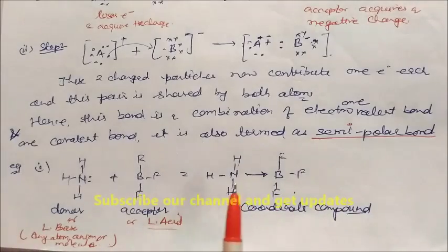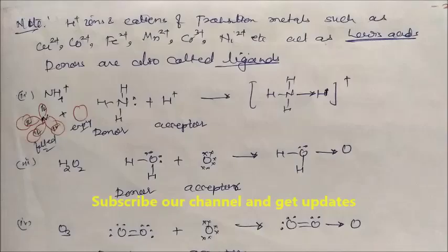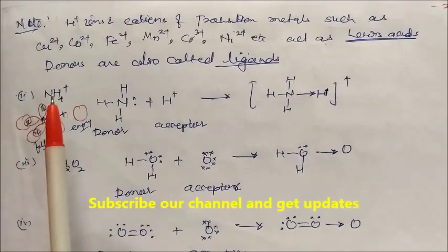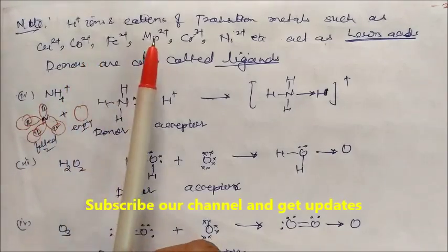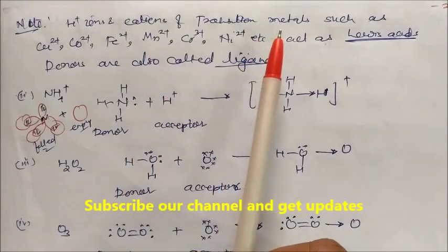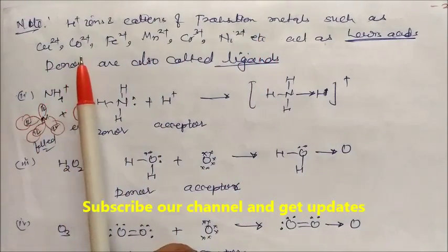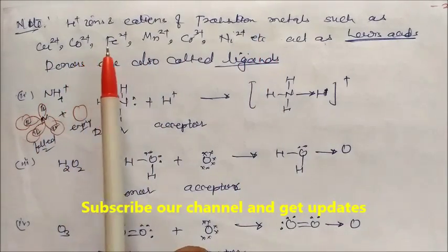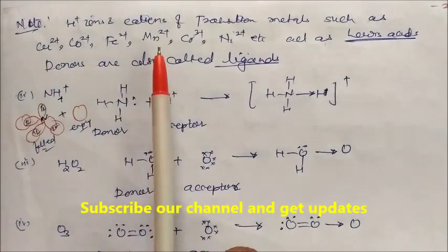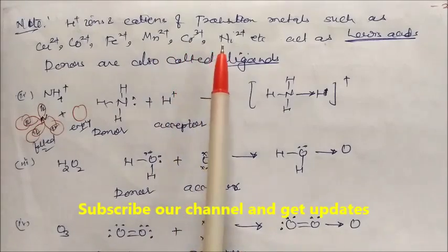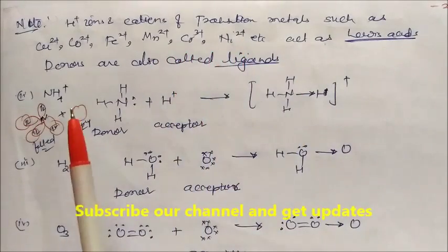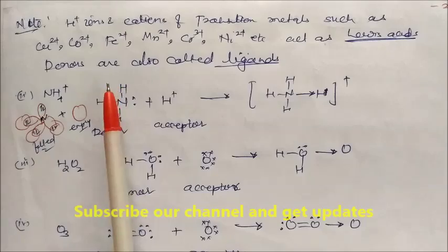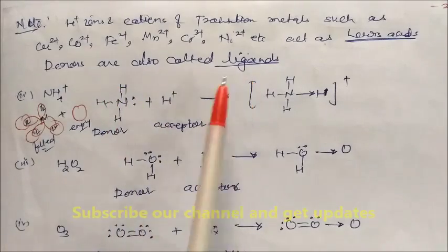This is called a coordinate compound or complex compound. Note: hydrogen ions and cations of transition metals such as Co2+, Fe2+, Mn2+, Cr3+, Ni2+, etc., act as Lewis acids. Donors are also called ligands. Please keep all this in mind.